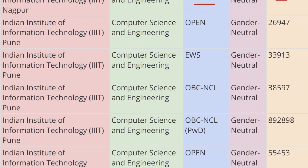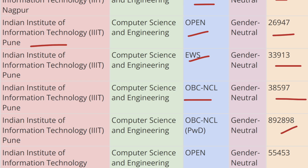Next in the list we have IIIT Pune. For Open category the cutoff rank is 26,947, for EWS category the cutoff rank is 33,930, and for OBC-CL the cutoff rank is 38,597. For OBC-CL PWD category, the cutoff rank is 8,92,898.